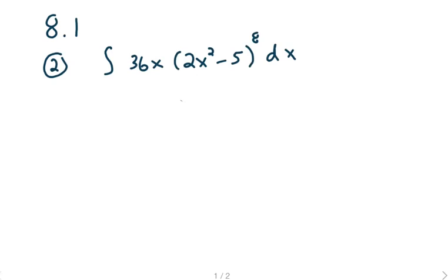Looking at this particular integral, we have a couple of choices here. First choice is if we could do some algebra. We could take 2x squared minus 5, raise it to the 8th power, and you'd have to multiply 2x squared minus 5 times itself 8 times. Not a good choice.